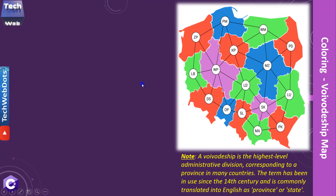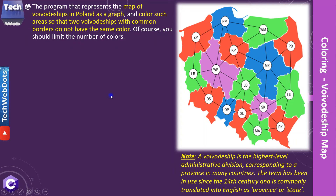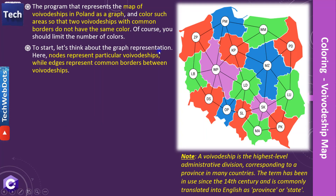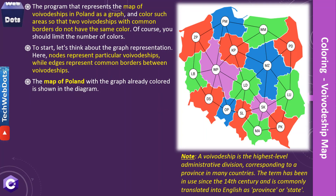Once we connect this whole concept with a UI it will look something like this. The program represents the map of voivodeships in Poland as a graph. The structure colors areas so that two voivodeships — meaning two states — with common borders do not have the same color. As you can see in the figure, no two states share the same color. You should limit the number of colors according to the coloring mechanism. In the graph, nodes represent particular voivodeships or states, while edges represent common borders between them.